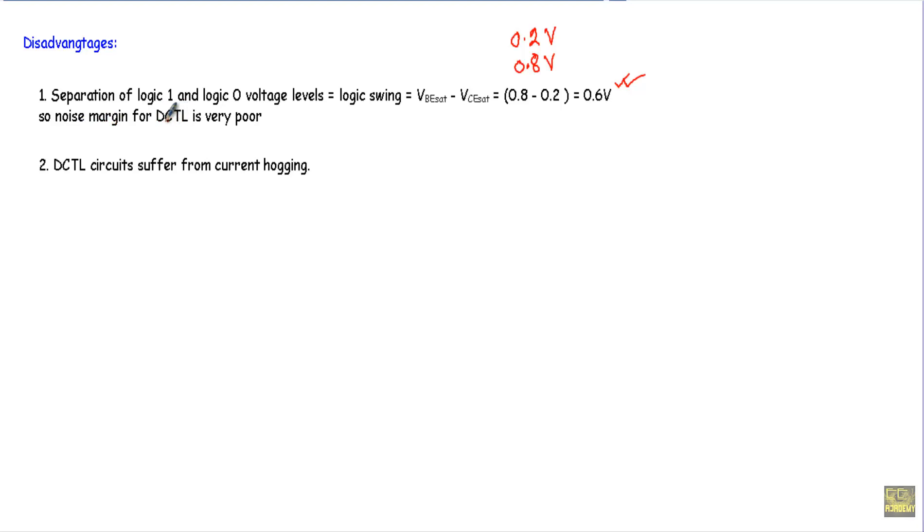Second, DCTL circuits suffer from current hogging. I will describe this current hogging term in my separate video. That's it, thank you.